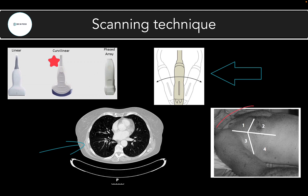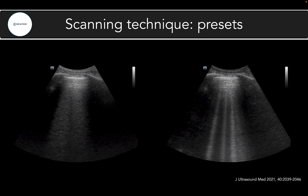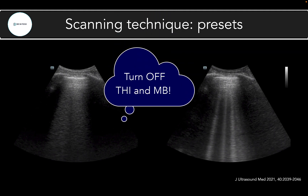Regarding scanning protocol, there are many protocols available — whatever you use, make sure you're scanning representative areas of both lungs because distribution of pathology matters. A few subtleties on presets: some machines have a lung preset, though these are often designed for pneumothorax detection only. In the absence of a well-designed lung preset, the abdominal preset works well. A key tip for interstitial syndrome scanning is to turn off THI (tissue harmonics imaging) and MB (multi-beam) settings — these are designed to minimize artifacts, but when scanning for vertical or horizontal artifacts, we want to maximize them. Turning these off gives much clearer visualization of A and B-lines.